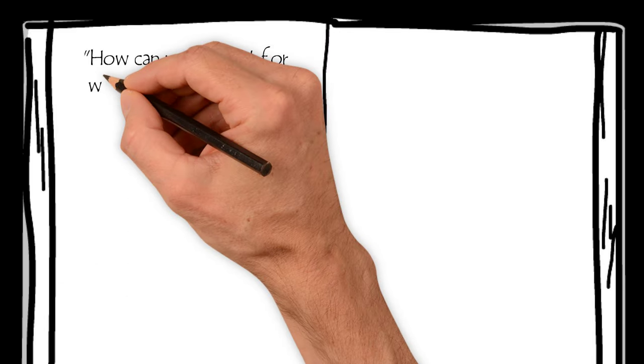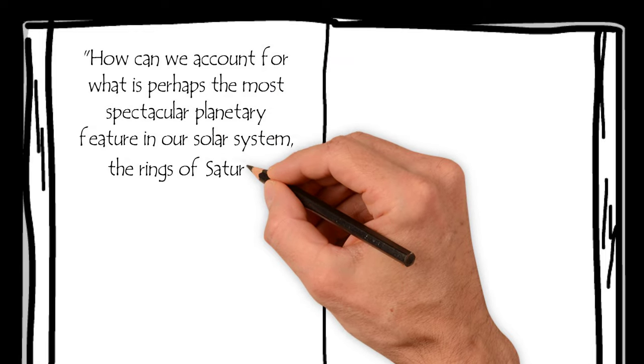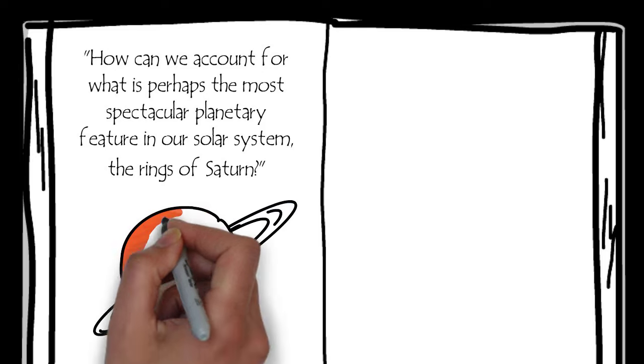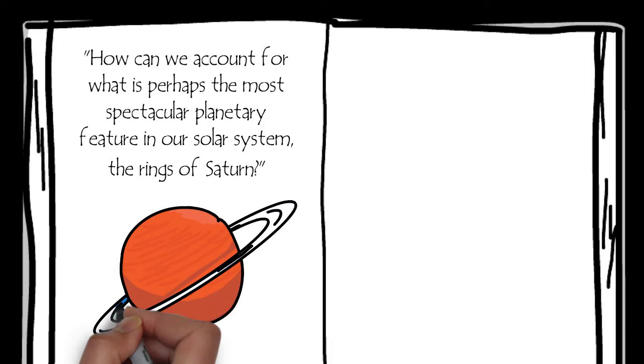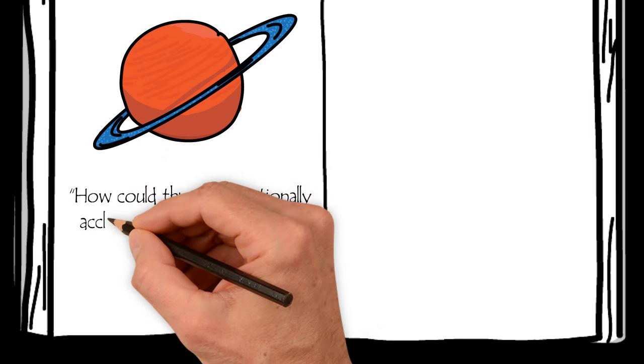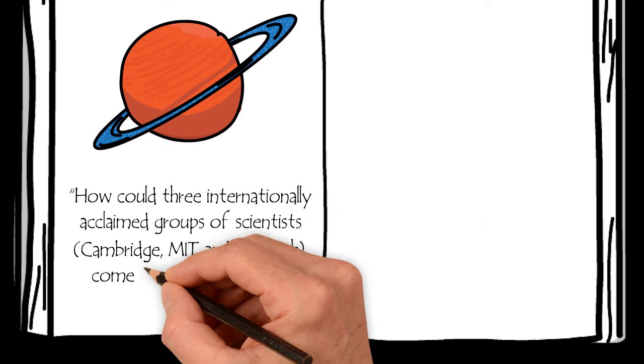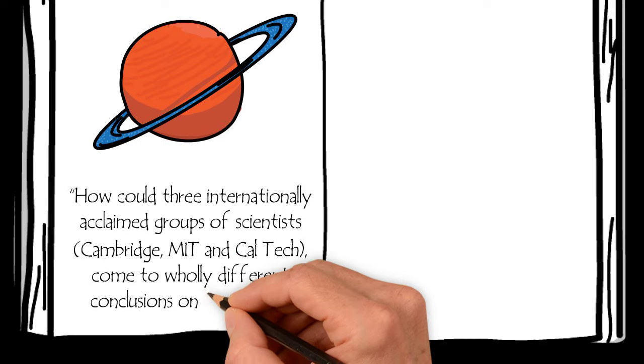How can we account for what is perhaps the most spectacular planetary feature in our solar system, the rings of Saturn? There's nothing else like them. What are the rings of Saturn made of anyway? And how could three internationally acclaimed groups of scientists—a group at Cambridge, MIT, and Caltech—come to wholly different conclusions on the answer?